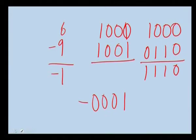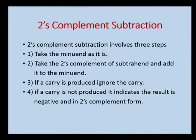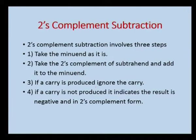Now let us go to 2's complement subtraction. In 2's complement subtraction, we follow almost the same steps as 1's complement, with a small alteration in the last step. We take the minuend as it is, take the 2's complement of the subtrahend, and add it to the minuend. The key difference is: if a carry is produced, the carry should be ignored. If a carry is not produced, the result is negative and it is in the 2's complement form.